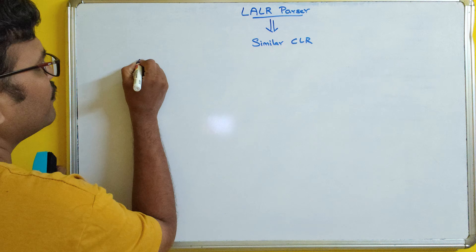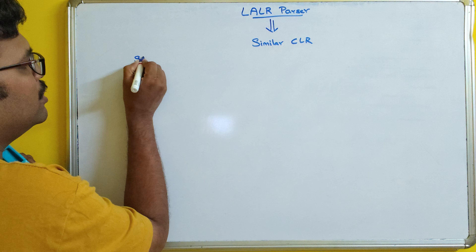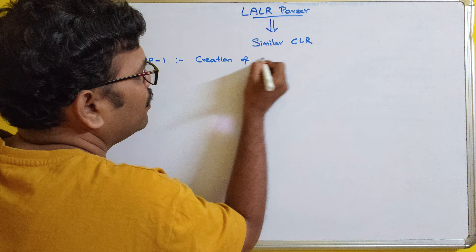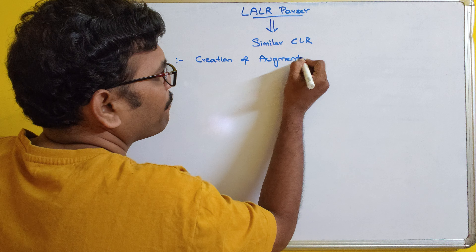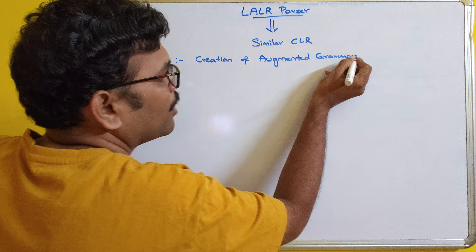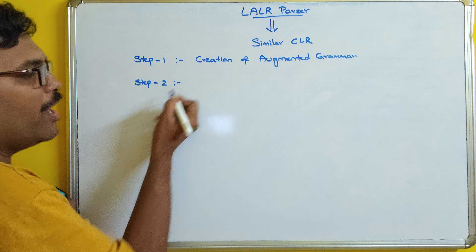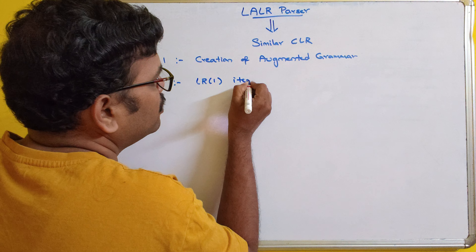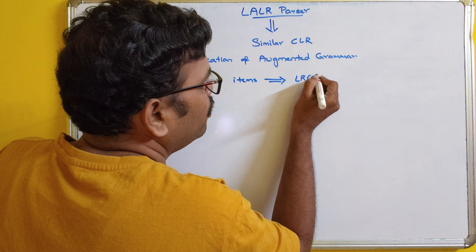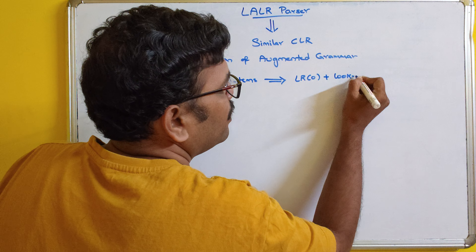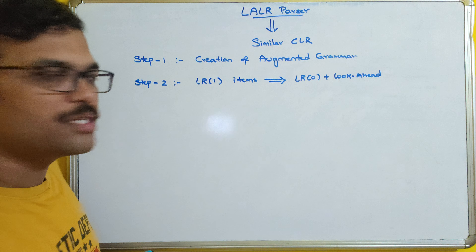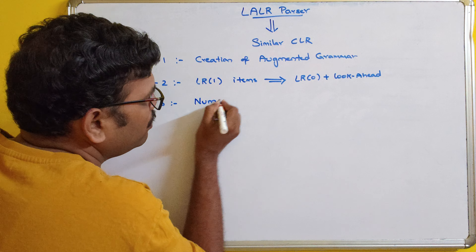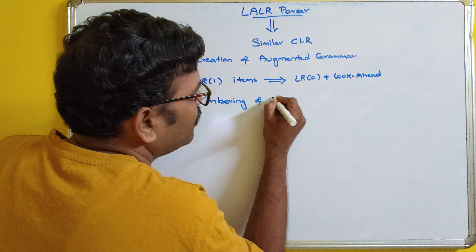Let me write down the steps. Step one is the creation of augmented grammar. Step two, after creation of augmented grammar, we have to find out the LR(1) canonical items — LR(1) items which are equal to LR(0) plus look-ahead. Step three, we need to do numbering of the productions — whatever productions we have taken, we have to number them.